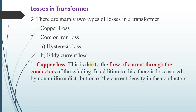First is the copper loss. This is due to the flow of current through the conductors of the winding, as these windings are mainly made up of copper. This is an ohmic loss, that is I²R loss, where R is the resistance of the conductor. In addition to this, there is the loss caused by non-uniform distribution of current density in the conductor. This is all about the copper loss.